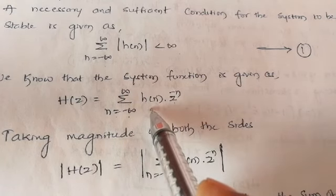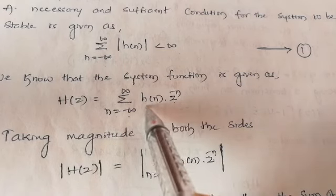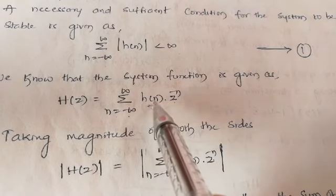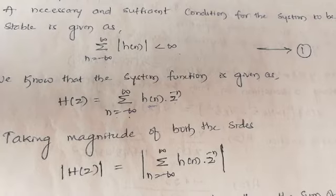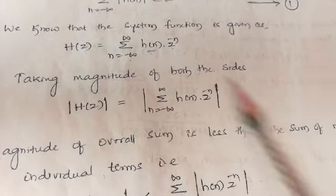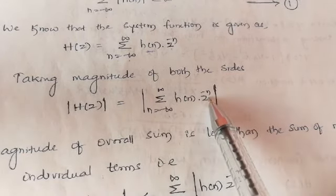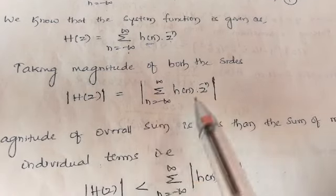This is nothing but applying the Z-transform to the unit sample response, obtained using the definition of Z-transform. Taking the magnitude on both sides: magnitude of H(z) equals magnitude of summation from n equal to minus infinity to plus infinity of H(n) times Z to the power minus n. We know the formula that the magnitude of an overall sum is less than or equal to the sum of magnitudes of individual terms.